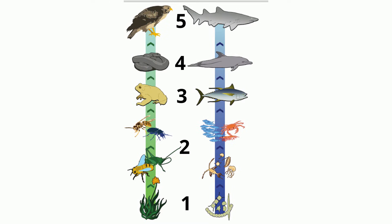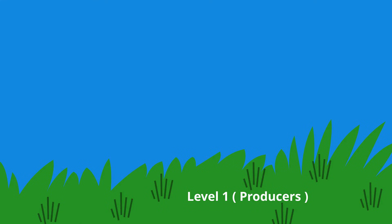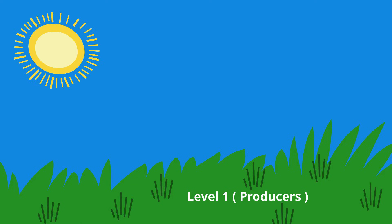Let's take a look at these steps that are commonly called levels. Level 1 – Primary Producers. Examples include plants and algae that use photosynthesis to make their food.